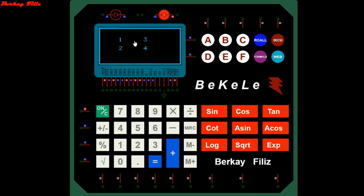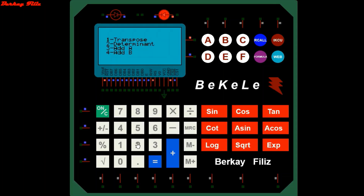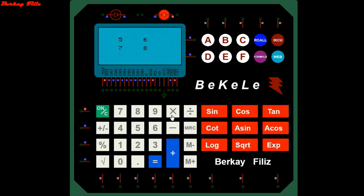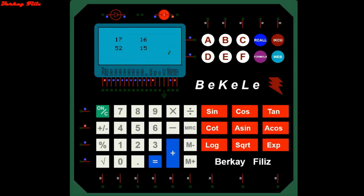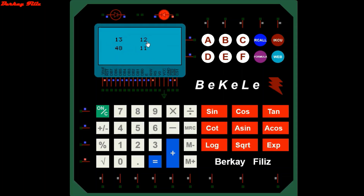I also want to define the C matrix. When we return to the menu, you can view the matrices you have defined, or the sum of the defined matrices. For example, F equals B plus C.